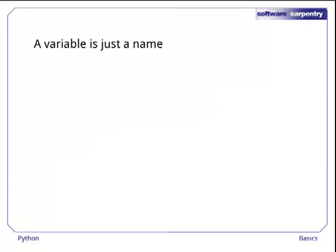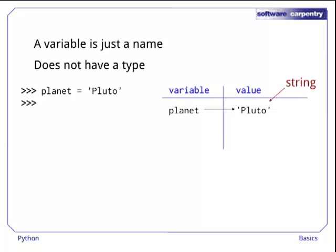A variable in Python is just a name. Unlike variables in some other languages, Python's variables do not have specific data types. For example, we can assign a string Pluto to planet, creating the table entry shown here, and then immediately assign the integer 9 to the same variable. This would be an error in a language like Java, since strings and integers are different data types, but Python is quite happy to do this.